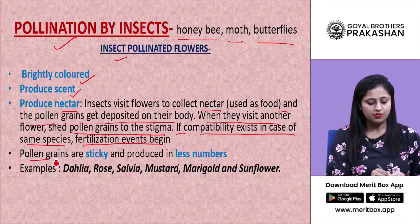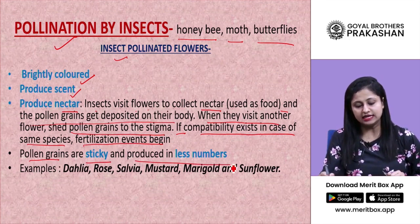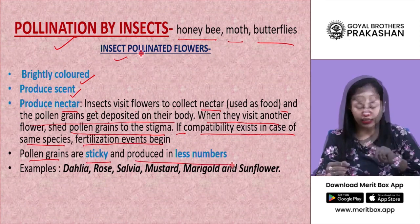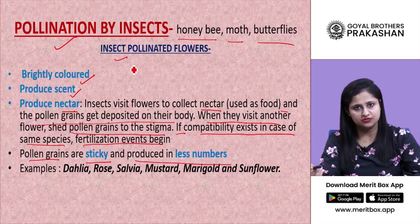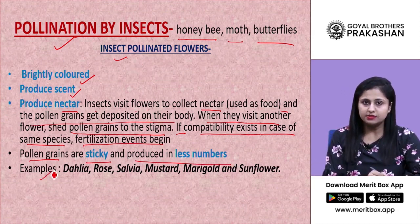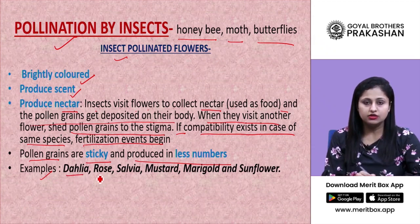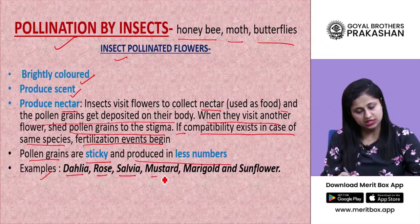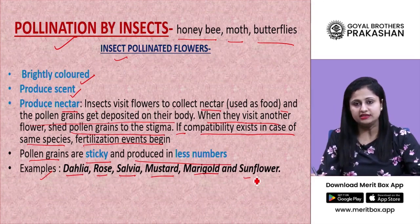Pollen grains are sticky and produced in fewer numbers in insect-pollinated flowers. Some examples of such flowers are dahlia, rose, salvia, mustard, marigold, and sunflower.